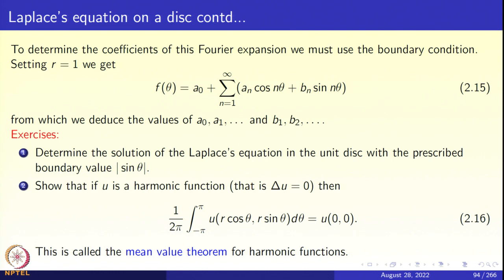Some exercises: first, f(θ) = |sin θ|, which is clearly Lipschitz. The bₙ coefficients are 0 since it is an even function, and the Fourier series converges uniformly. Second, show that if u is harmonic, then (1/2π)∫_{−π}^{π} u(r cos θ, r sin θ) dθ = u(0,0). This is the mean value theorem for harmonic functions, proved simply by integrating equation 2.15 term by term.